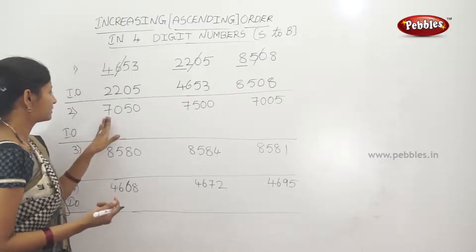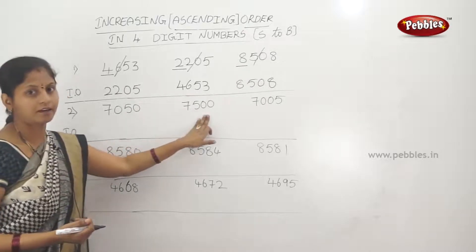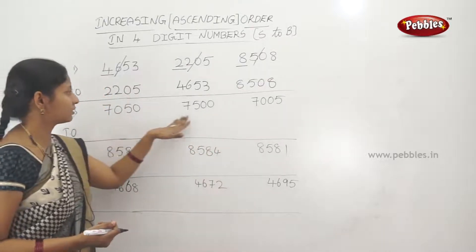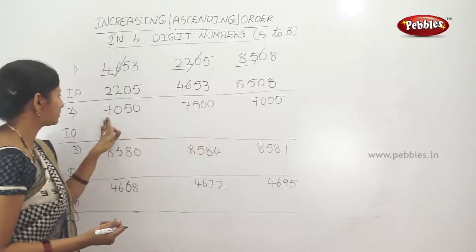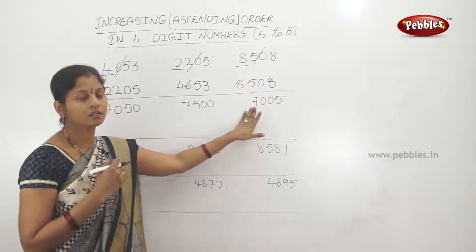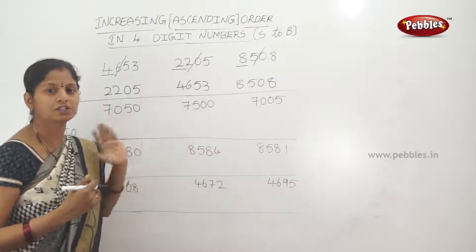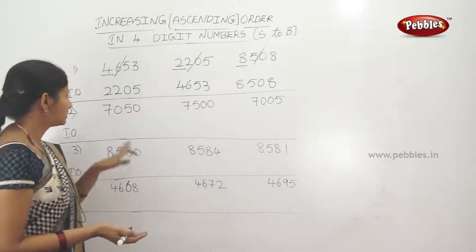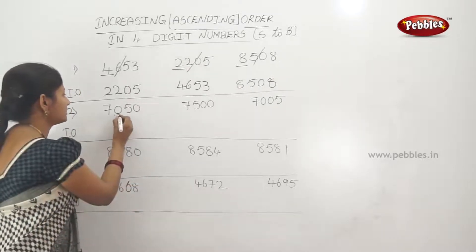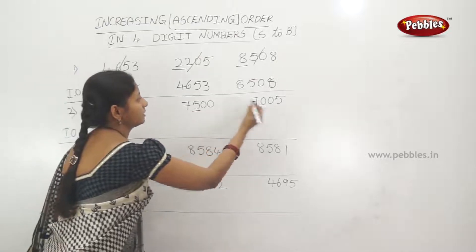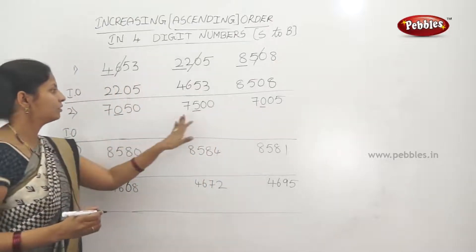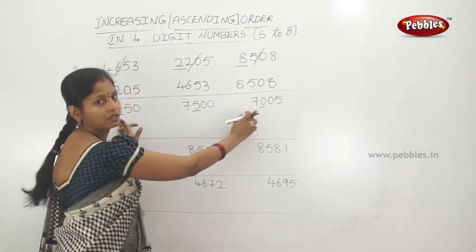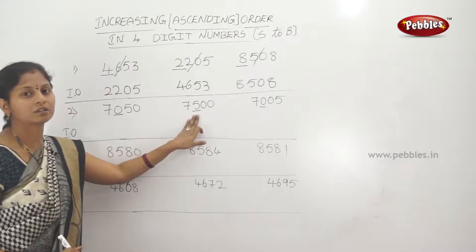Next example: 750, 7,050, and 7,500. The starting digits are all 7 — same. So we compare the second digits: 0, 0, 5. Two numbers have second digit 0, so we move to the third digit for those.